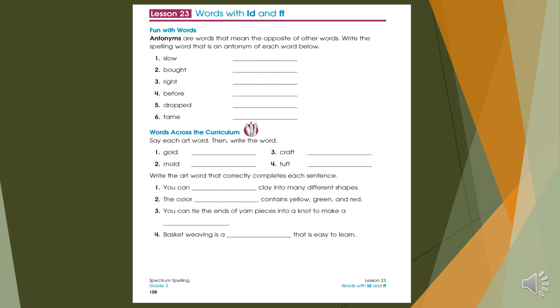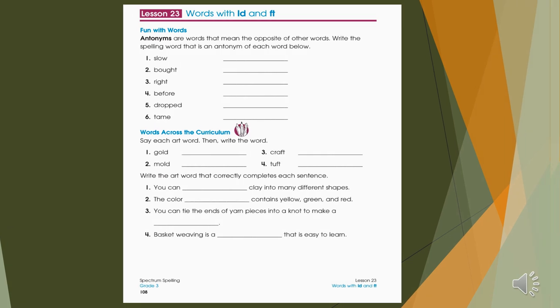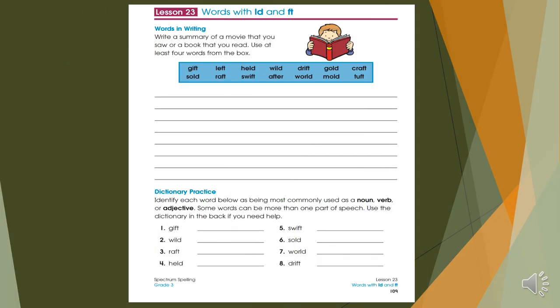The second exercise on that page, you are just copying them. You just rewrite the word in order to be used to how to write it, how to spell it. Gold, mold, craft, tuft. The third exercise is asking you to write the word that correctly completes each sentence. You have four blanks. And you know how to do that exercise. You are using the words that you have in the second exercise. Gold, mold, craft, tuft. To use them, to write them in the blanks of the last exercise.